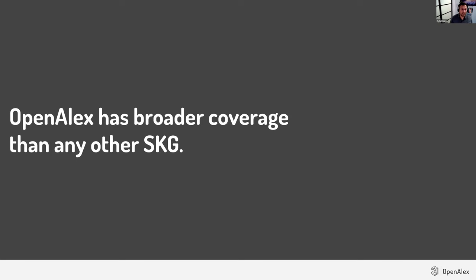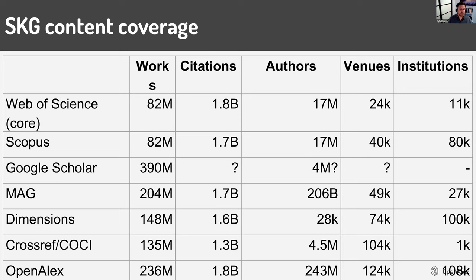Because of all these things combined, OpenAlex has broader coverage than any other SKG. This table is about a year old but gives a sense of the scale: Web of Science and Scopus have around 82 million works, while OpenAlex has 236 million. Another good reference point is Microsoft Academic Graph, which had 204 million works — that's what OpenAlex is building off of, so you can see how much has been added since then.